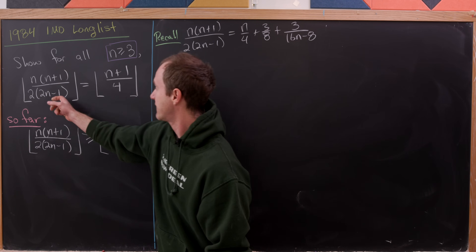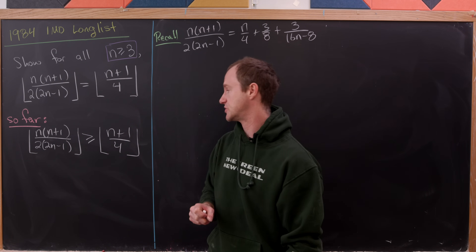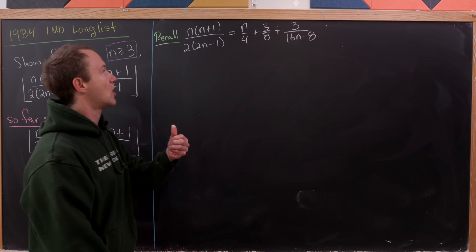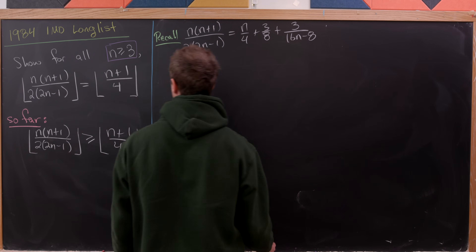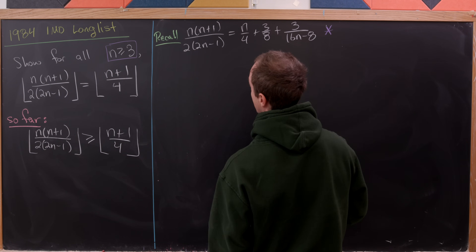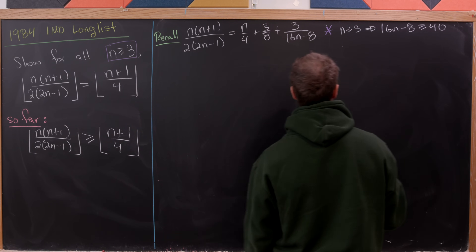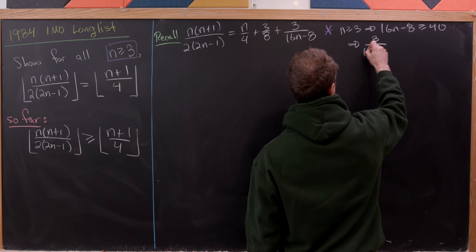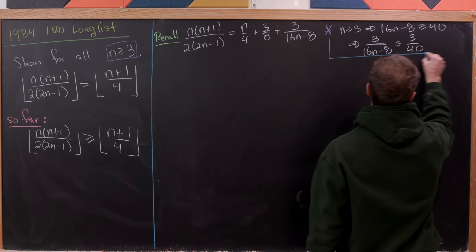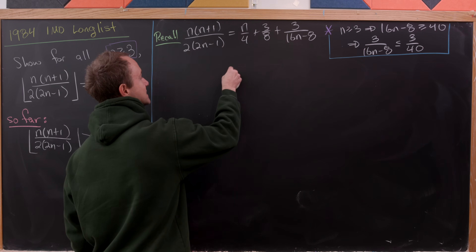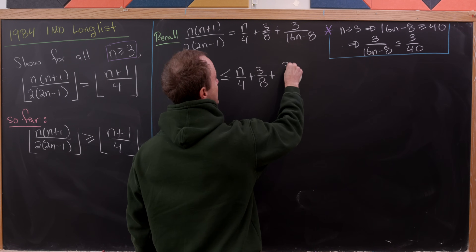We just proved the left-hand side is bigger than or equal to the right-hand side. Now we'll prove the left-hand side is less than or equal to the right-hand side, and that'll finish everything off. Recall the polynomial long division result from before. Now using n bigger than or equal to 3: 16n minus 8 is bigger than or equal to 40, which tells us 3 over 16n minus 8 is less than or equal to 3 over 40. So n times n plus 1 over 2 times 2n minus 1 is less than or equal to n over 4 plus 3 over 8 plus 3 over 40.